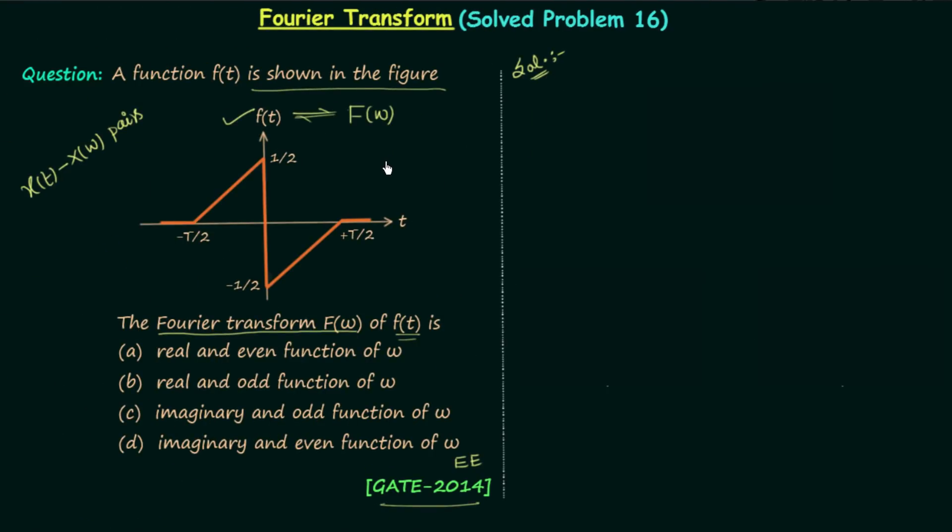In order to comment about the nature of F(ω) we need to find the nature of f(t) first. We will analyze the given waveform and find the nature of signal f(t). You can see signal f(t) is having real values, so it's a real valued signal. Now we will find out whether signal f(t) is an even signal or an odd signal.